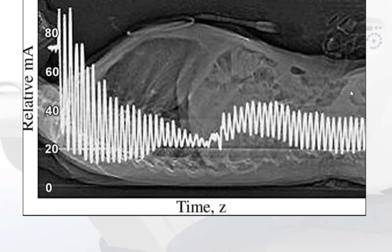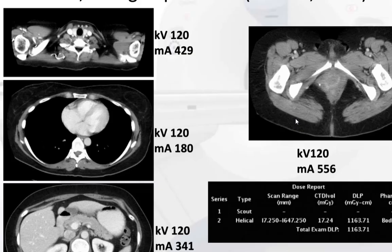When the technologist plans a scan using a scout image, the machine uses automatic exposure control to determine that over the shoulders with lots of bone, it will need more MA. Over the lungs where there is air, the MA will decrease. Where it encounters soft tissues and solid organs, it will go up again. This is called AEC or automatic exposure control.